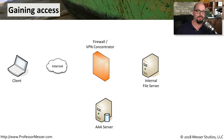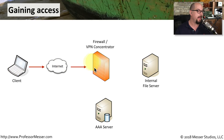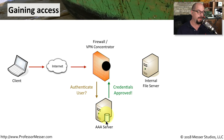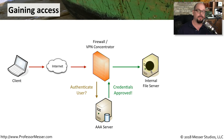When we want to gain access to some type of network resource, we need to provide credentials. Those credentials are going to be checked first by a AAA server before we're able to gain access to that resource. For example, someone authenticating through a VPN concentrator sends their username, password, and other authentication credentials, which are checked against a AAA server. The AAA server confirms the credentials are valid, approves them, and sends the request to services on the inside of the network. There are many different protocols that can be used in this authentication process to the AAA server.